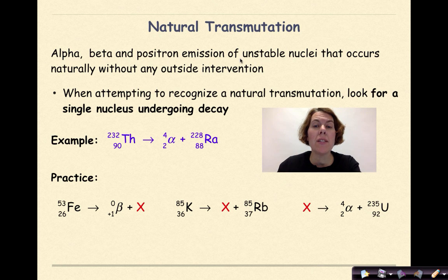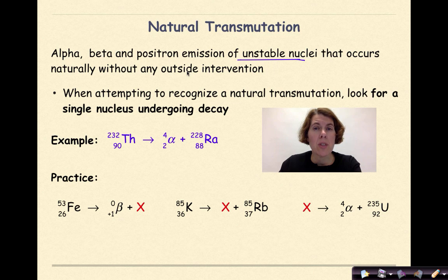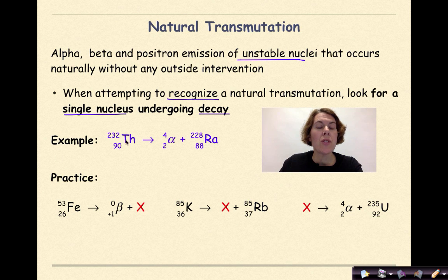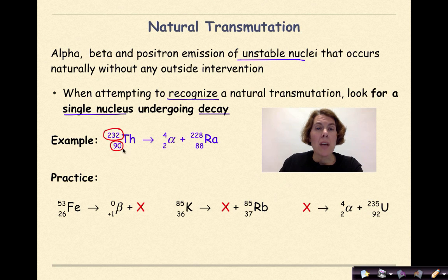Let's talk specifically about natural transmutation: alpha, beta, and positron emission of unstable nuclei that occurs naturally without any outside intervention — no outside forces are forcing this reaction to occur. When attempting to recognize a natural transmutation, look for a single nucleus undergoing decay. In this example, thorium-232 is a pretty heavy element with a very large mass number and atomic number.